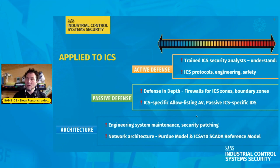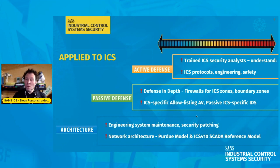Applying this concept to the industrial control system sector, we can map architecture, passive defense, and active defense in this way. For architecture, we're looking at the network design but also building systems with security in mind — for example, engineering systems maintained as engineering systems, security patching done when suitable for the ICS environment and prioritizing safety first. Network architecture uses something like the Purdue model or the ICS-410 SCADA reference model to create boundaries and zones. For passive defense, we have defense-in-depth strategies such as firewalls that understand industrial control protocols to zone off ICS environments, ICS-specific allowlisting, antivirus solutions, and passive ICS-specific intrusion detection systems for the network.